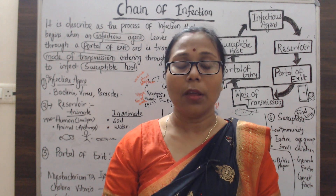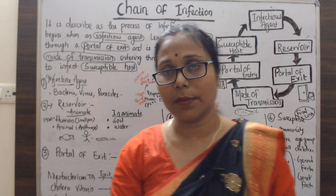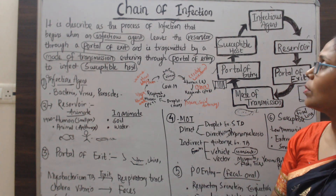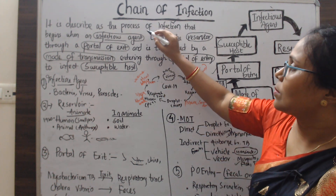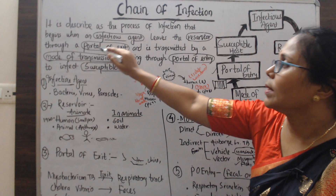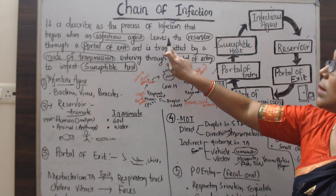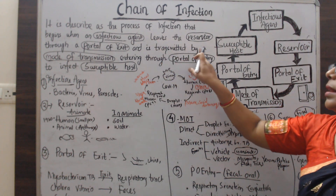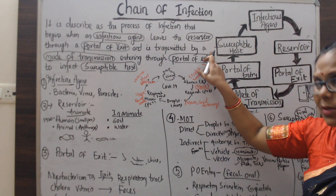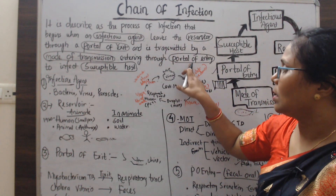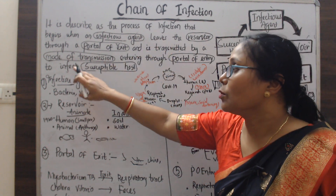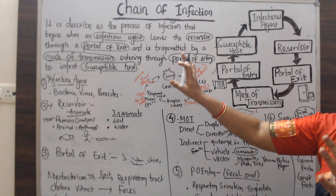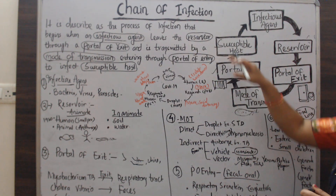Let's see the definition of the chain of infection. The infection process begins when the infectious agent leaves the reservoir through a portal of exit, and is transmitted by a mode of transmission, entering through the portal of entry into a susceptible host.